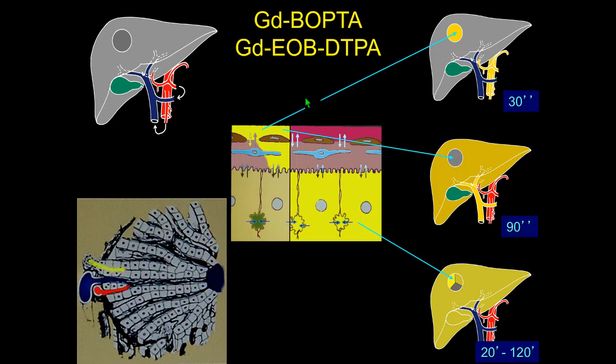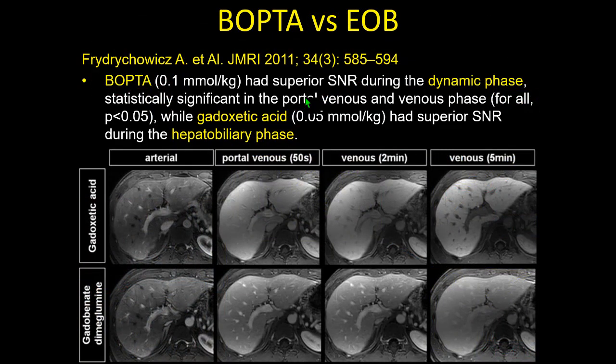The protocols differ: with EOB we start with T1 dynamic, then while waiting for the hepatobiliary phase we perform T2 and DWI. With Multihance, we do T2, DWI, then T1 dynamic, take the patient out, and after two hours they return. So the organizational approach is quite different.